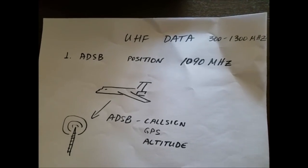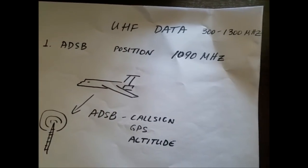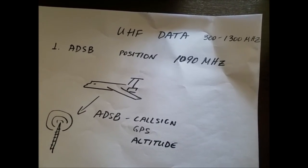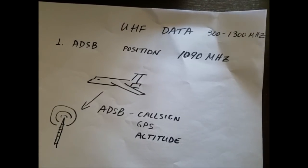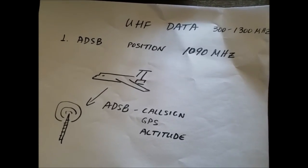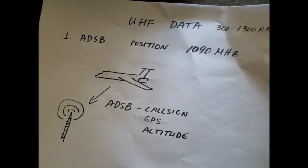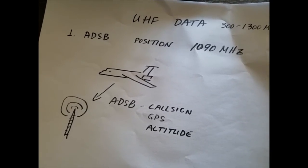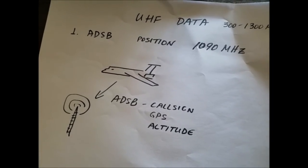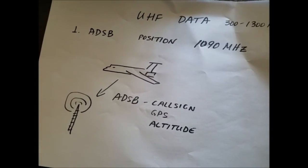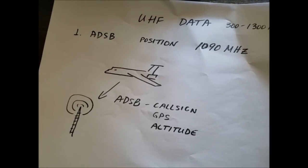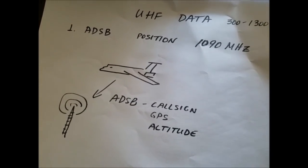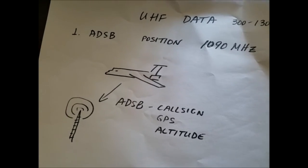The next thing that aircraft use is UHF data, which usually operates around 300 MHz to 1.3 GHz. The only example I have is ADS-B. ADS-B is a beacon equipped on every aircraft that transmits the aircraft's call sign, GPS position, and altitude. If you try to track airplanes and it shows you exactly where they are, it's probably getting that information through ADS-B.